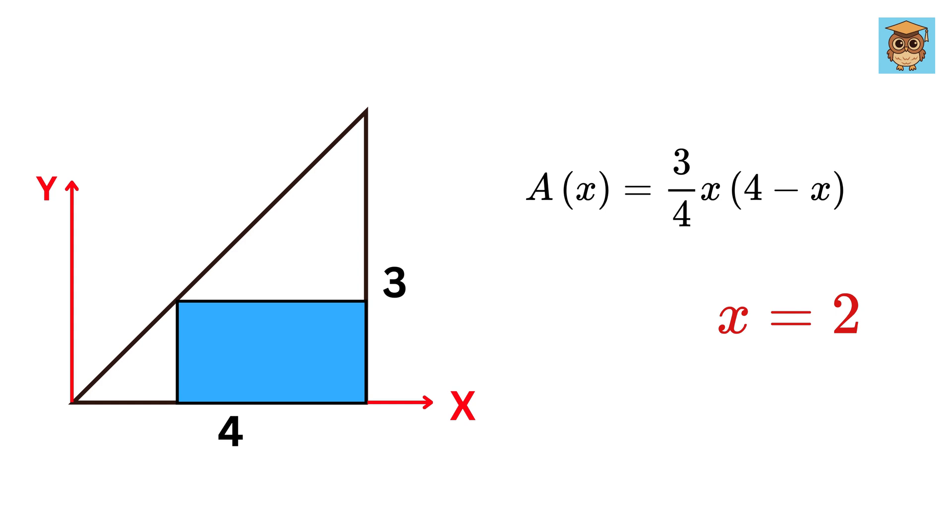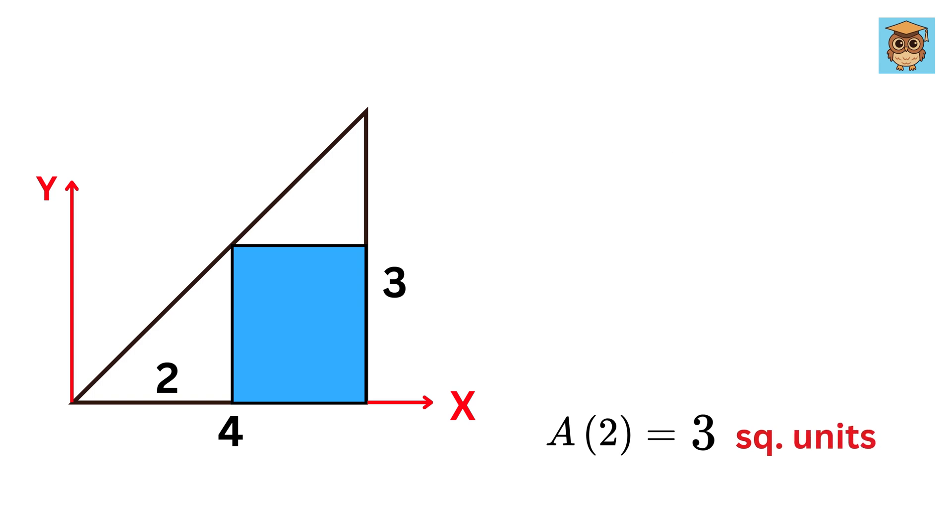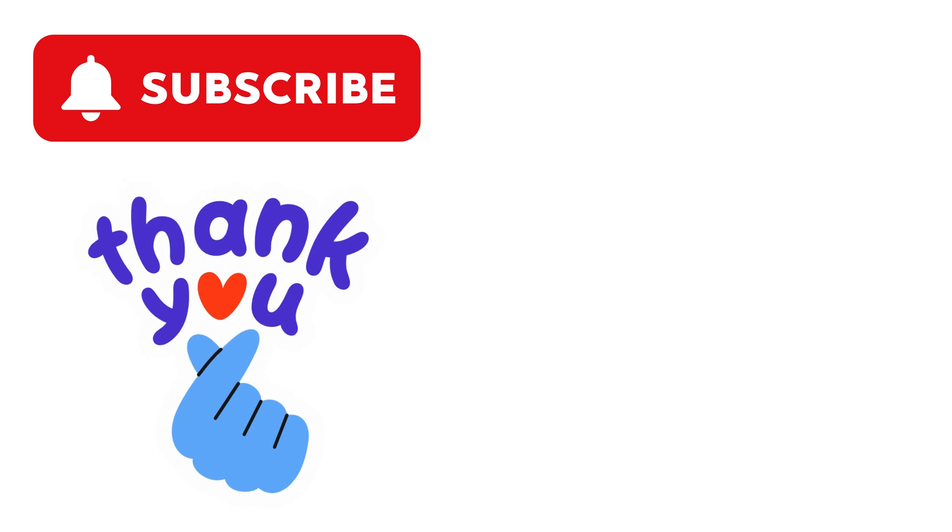Now you have already observed that in order to achieve the maximum area of the rectangle, you go halfway down this line. If x equals 2, then A, or the maximum area we get, will be, just substitute x here, and it will be 3. Don't forget to put the square units. Isn't this super cool?